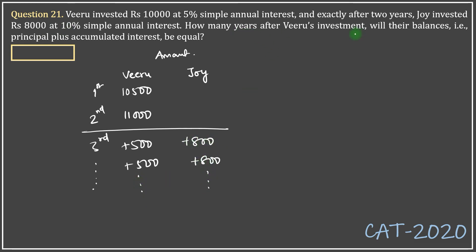After how many years, let's say from this point, after x years their amounts will be equal. So in x years, the amount of Veeru will become 11,000 plus 500 for x years, that is 500x.